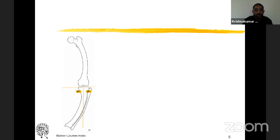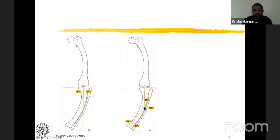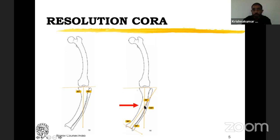Now we go to the deformity planning of the tibia. You plot the mechanical axis of the tibia and find out the MPTA that is abnormal. LDTA is also abnormal at 103 degrees, so you have a deformity in the proximal as well as the distal tibia. The next step is to draw the normal proximal mechanical axis at 87 degrees MPTA — a line at 87 degrees to the joint line. A distal axis at 90 degree LDTA gives a deformity of 30 degrees, and this is the cora — the apex of the deformity — coming at the junction of the proximal one-third and distal two-thirds.